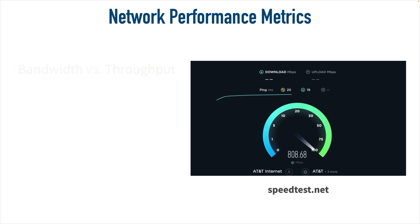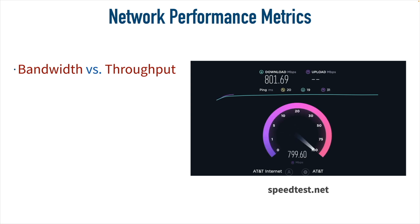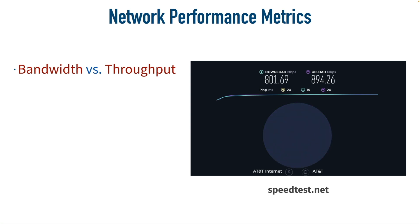We're going to distinguish between the concepts of bandwidth and throughput in this video. When I go out to speedtest.net, it tells me that my download speed is a little over 801 megabits per second — that's the actual throughput as I'm downloading data from this internet-based server. When I upload, my upload throughput was a little over 894 megabits per second. We can also see the overall latency — about 19 milliseconds downloading and about 20 milliseconds uploading. Latency is really the sum total of all delays.